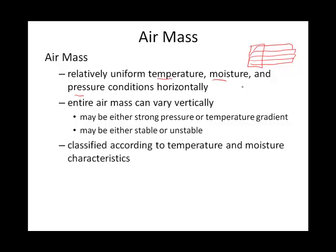Now let's get to classifying air masses. The two most likely ways to classify an air mass will be with regard to its temperature — hot or cold — and its moisture content — moist or dry. Kind of like we did with clouds, we end up with these one- or two-letter abbreviations to describe an air mass, and there are five different air mass types.